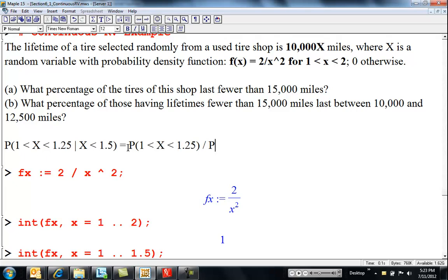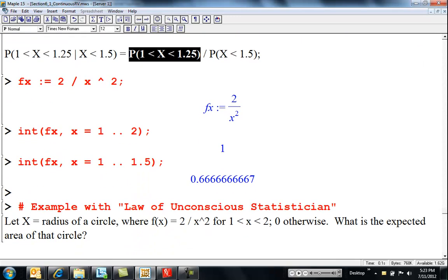which is the same, divided by probability x is less than 1.5. So, now all I need to do is find this numerator and divide by what we already had calculated. So, let's just do that.